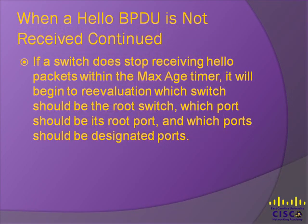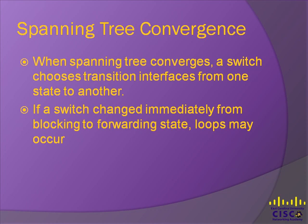If a switch does in fact stop receiving hello packets within the given max age timer, it will begin to reevaluate which switch should be the root switch, which port should be its root port, and which ports should be designated ports. When spanning tree converges, a switch chooses transition interfaces from one state to another. But if the switch changes immediately from blocking to forwarding, temporary frames may loop. So how do we prevent this from happening?